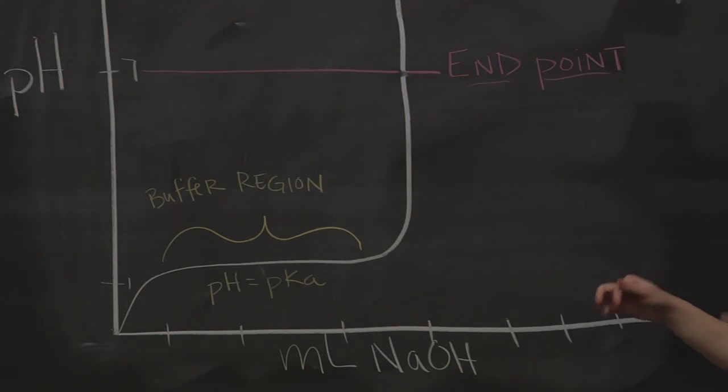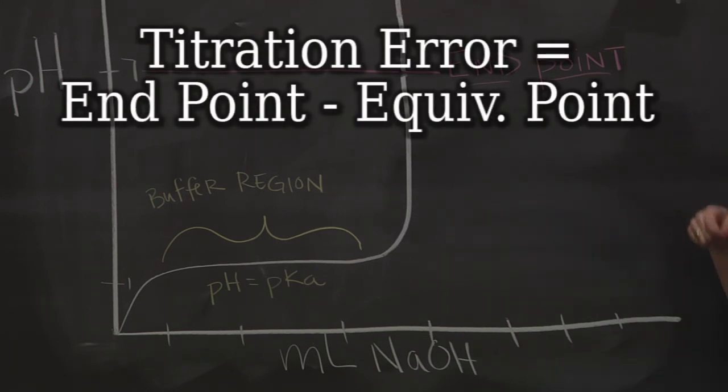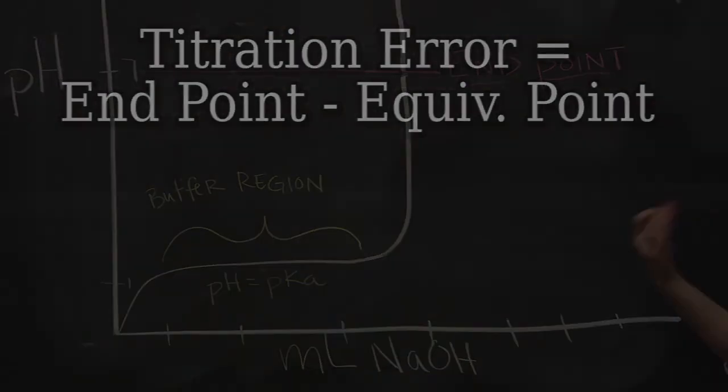The end point is different than the equivalence point in that the end point is the visual representation. So right when you see that pink that is your end point which is different than the equivalence point because the equivalence point is a theoretical point that we will never be able to truly know because the closest we can get is when an indicator reacts and changes color. So we account for this discrepancy by subtracting the end point from our equivalence point and we get our titration error. So we know how good our titration was.